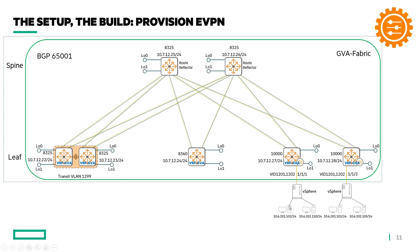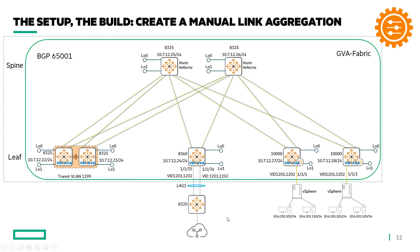Once we have the VRF, we create the EVPN instances. We have a couple of vSphere hosts connected to the 10K switches, with VMs and workloads connected on different VLANs — VLAN 1201 and 1202. Once the EVPN instances are provisioned, those VMs will be able to communicate with each other.